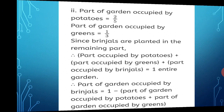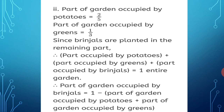Part of garden occupied by potatoes = 2 upon 5. Part occupied by greens = 1 upon 3. Since brinjals are planted in the remaining part, part of potatoes + part of greens + part of brinjals = 1 whole garden. Therefore, part occupied by brinjals = 1 minus (part of potatoes plus part of greens).